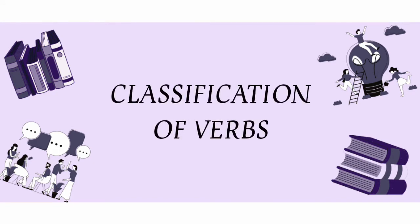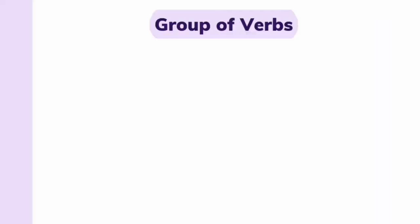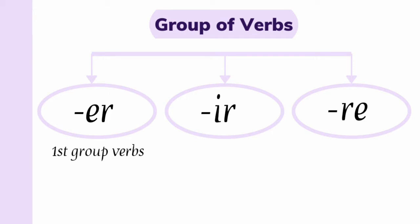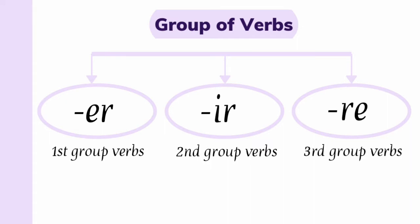So in French, verbs can mainly be classified into three groups: ER ending verbs, IR ending verbs, and RE ending verbs. ER ending verbs are called first group verbs, IR ending are called second group verbs, and RE ending are third group verbs.